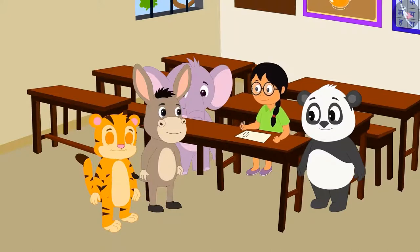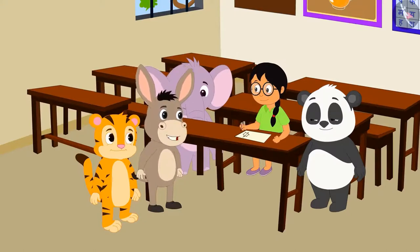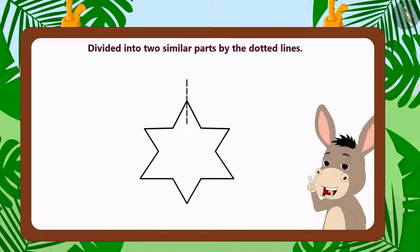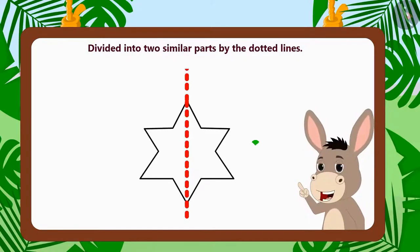Then Bola explains, there is no magic. There are some alphabets and objects that are made of two similar parts. Therefore, they can be divided into two similar parts by using a dotted line.